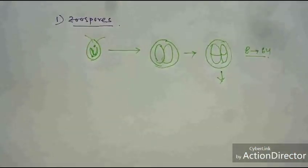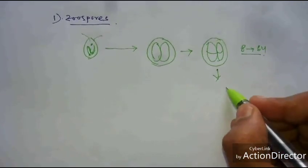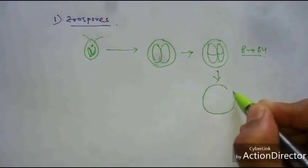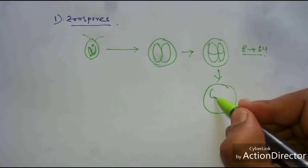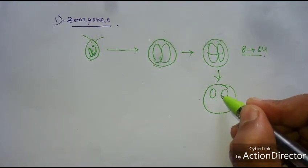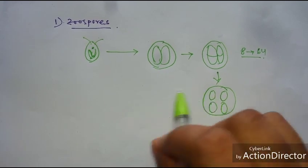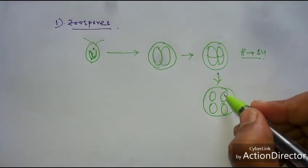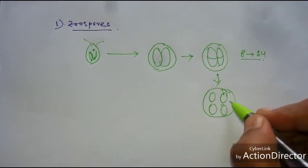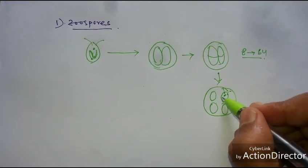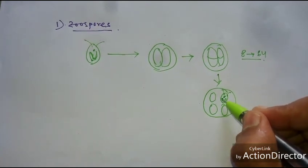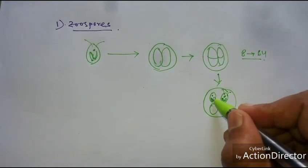When cleavage of protoplast is complete, each protoplast turns into a cell that looks like the parent cell, but their size is small. These are the daughter cells.